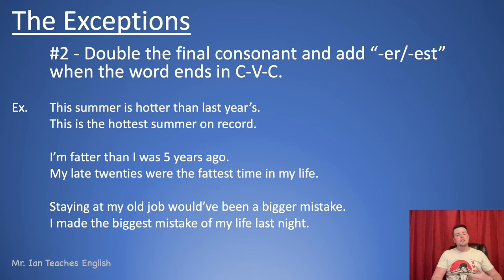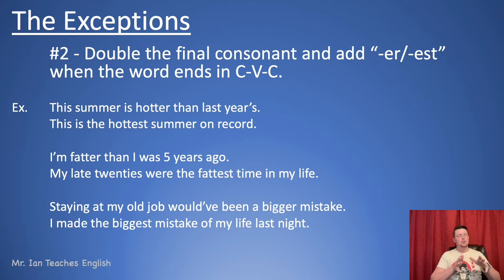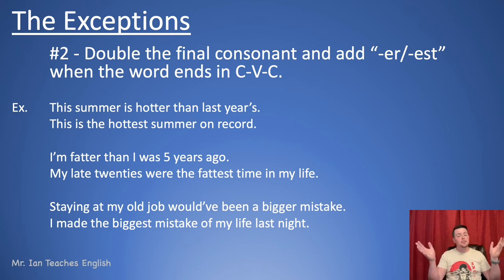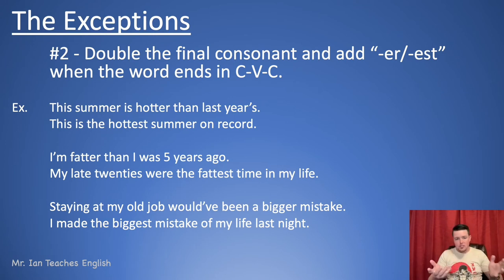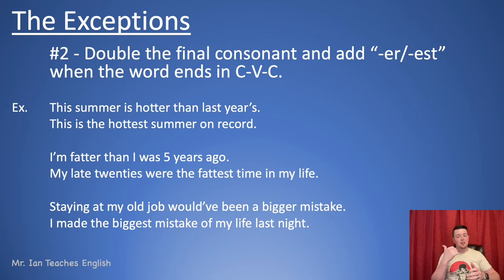Exception number two — this is a spelling exception. Double the final consonant and add -ER or -EST when the word ends in C-V-C: consonant, vowel, consonant. We have 26 letters; five vowels — A, E, I, O, U — everything else is a consonant. Example: 'This summer is hotter than last year's.' The adjective is 'hot' — H is a consonant, O is a vowel, T is a consonant — so for spelling purposes we double the last T before adding -ER.